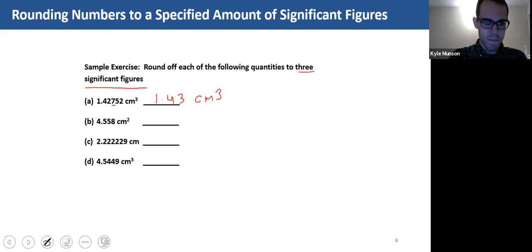Same idea here. 4.56 centimeters squared. The first digit to be dropped, the eight, is greater than five. So we round the five up to a six.